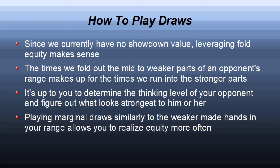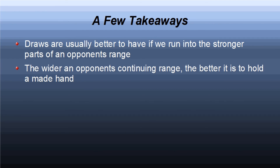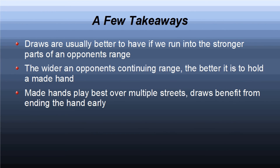Let's sum up. The fewer made hands we beat, the better it is to have a draw. Against straightforward opponents, you will tend to have more equity when you semi-bluff shove and get called than if you shoved with a made hand. It's much better to have a draw when facing a tight player or the tighter part of an opponent's range. The more hand combinations we beat, the better it is to hold a made hand. In short, made hands benefit from getting to later streets and multiple value bets, while draws benefit from maximizing fold equity and ending the hand early.